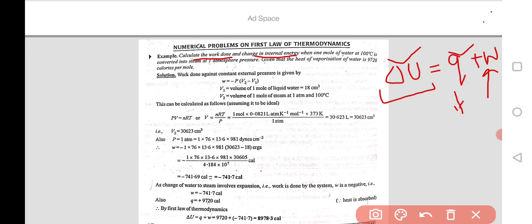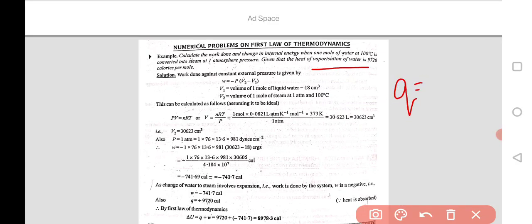Okay, this is the value given which is heat of vaporization of water. Means q the value given is 9720. And you calculate the work done and change in internal energy. And one mole of water is converted into steam. So this is when you use heat of vaporization.